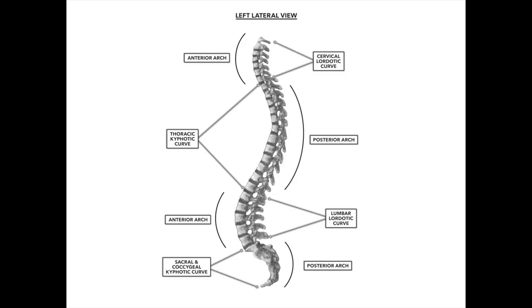Between those vertebrae we have 23 intervertebral discs. We do not have a disc at the very superior portion of the cervical spine — between C1 and the skull and between C1 and C2 — but everywhere from C2-C3 down to L5-S1 we have an intervertebral disc. The overall shape of the spine has curves: cervical and lumbar lordosis and thoracic kyphosis, creating almost an S-shape when viewed from the side in the sagittal plane.